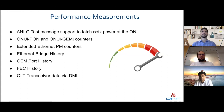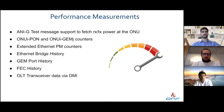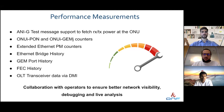In the 2.8 release we implemented the following performance measurement counters: PLOAM self-test message support to fetch the RX and TX power at the ONU; ONU PON and ONU GEM counters from the OLT; on-demand extended Ethernet PM counters which are free-running counters accumulated across all UNI ports on the ONU; and Ethernet bridge history, GEM port history, and FEC history L2 PM periodic counters fetched every 15 minutes and dumped on the Kafka bus. We also support fetching OLT transceiver data via the TMI module. We collaborated with operators to get requirements and implement all these PM counters, providing better network visibility, debugging, and live analysis.